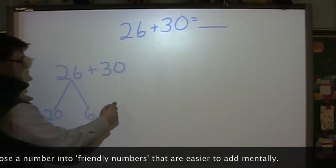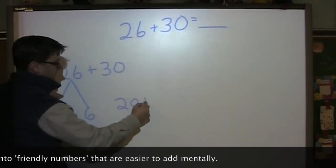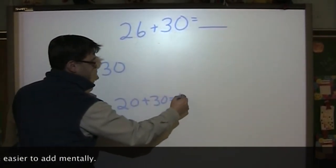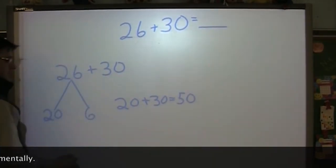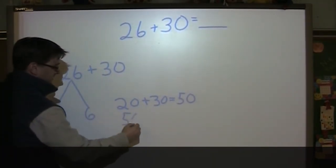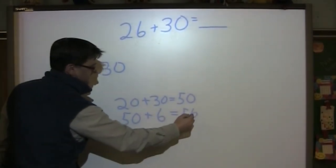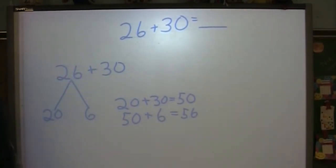And from here we will make a number sentence of 20 plus 30 equals 50. And we'll take the 50 and add back the 6 which equals 56. So there is the number bond way.